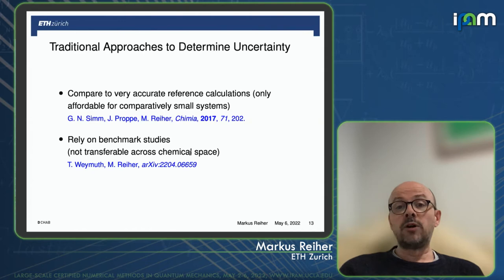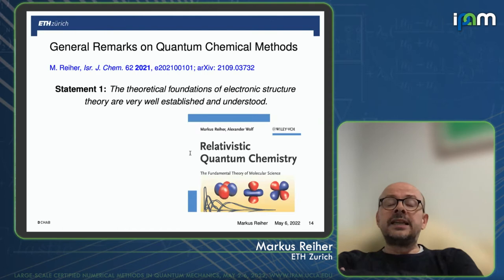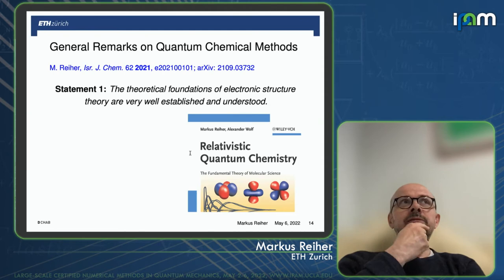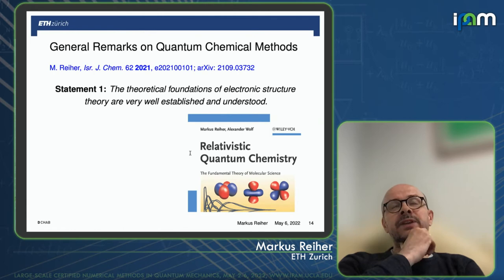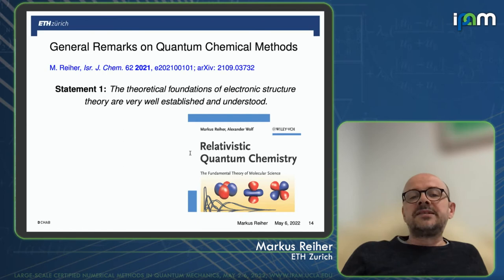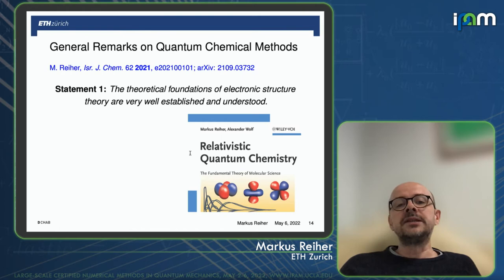That's not a good situation. I will now give general remarks on quantum chemical methods elaborated in the paper mentioned earlier, to justify why I believe we need a Bayesian way of looking at things to figure out how accurate data is. The first statement: the theoretical foundations of electronic structure theory, which is the basis of quantum chemical methods, are well established and understood.